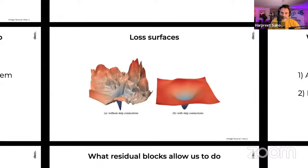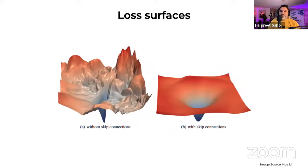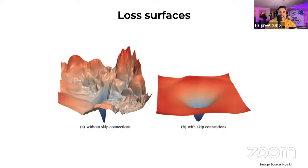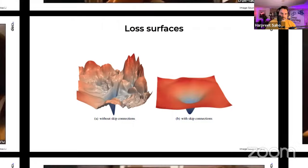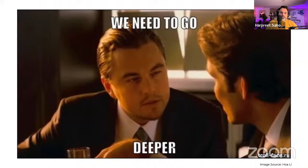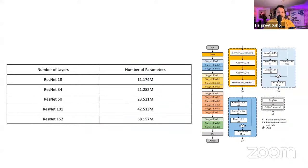The end result is that residual blocks either learn something useful and contribute to reducing the network's error, or they perform identity mapping and do nothing at all. Because of this, the loss surface of a neural network with skip connections is smoother. Each layer tries to reduce its own contribution to the final error, and the layer learns it doesn't need to process the parts of the tensor that don't change. This makes each layer's job simpler, enables it to be smaller, and leads to faster convergence. The ResNet family has ushered in an era of ever-increasingly deeper networks, ranging from 18 layers to over 1,000 layers.